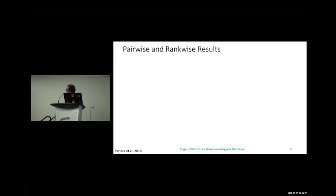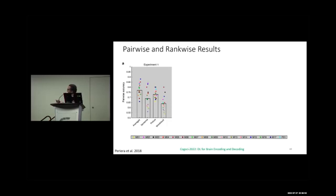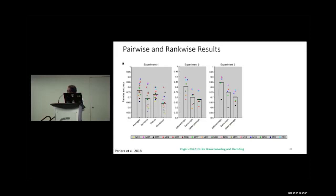Looking at the results — pairwise and rank-wise: we have each view (picture, sentence, word cloud) and the average of all three. We can see better decoding accuracy especially from the picture view, followed by sentence view, across all 16 subjects. Similarly, for experiments two and three we have different-topic, same-topic-different-passage, and same-passage results, along with rank accuracy for all subjects.